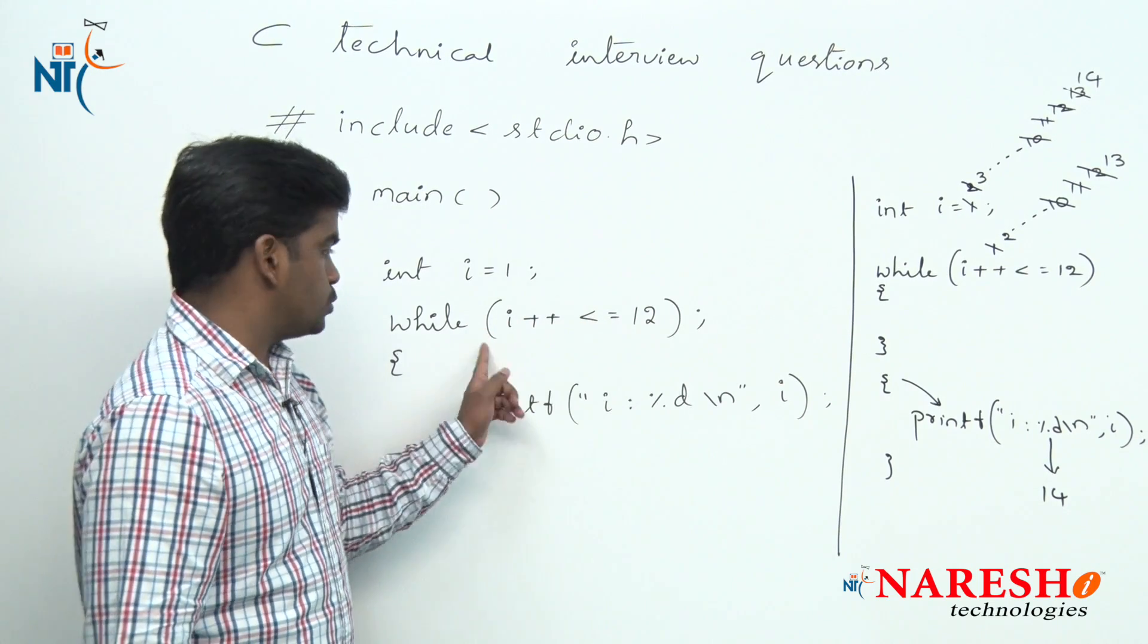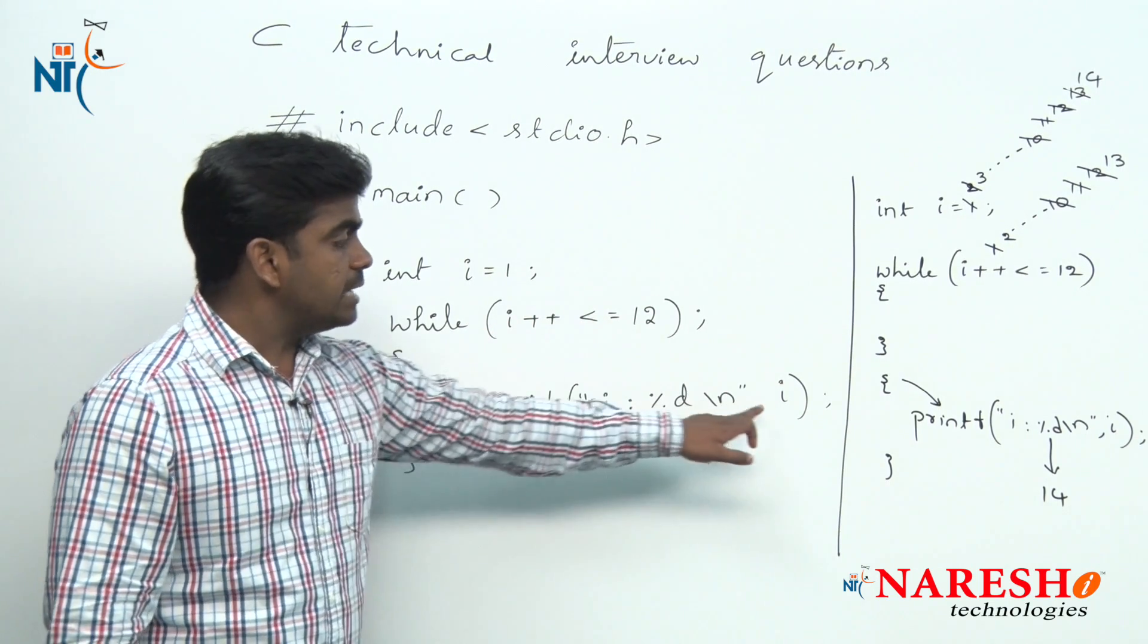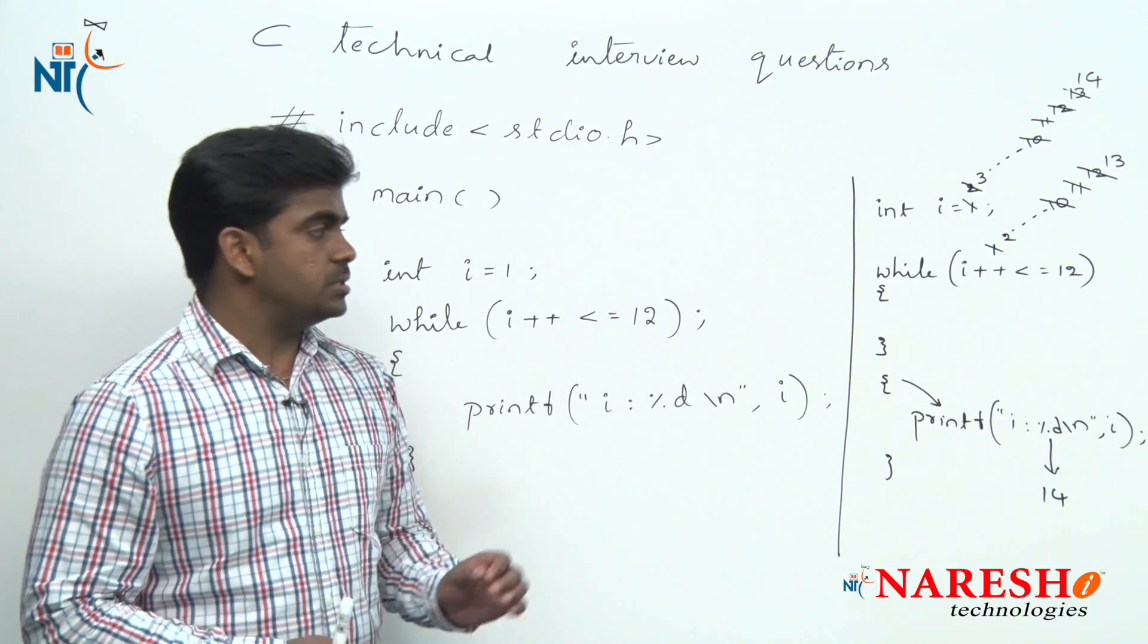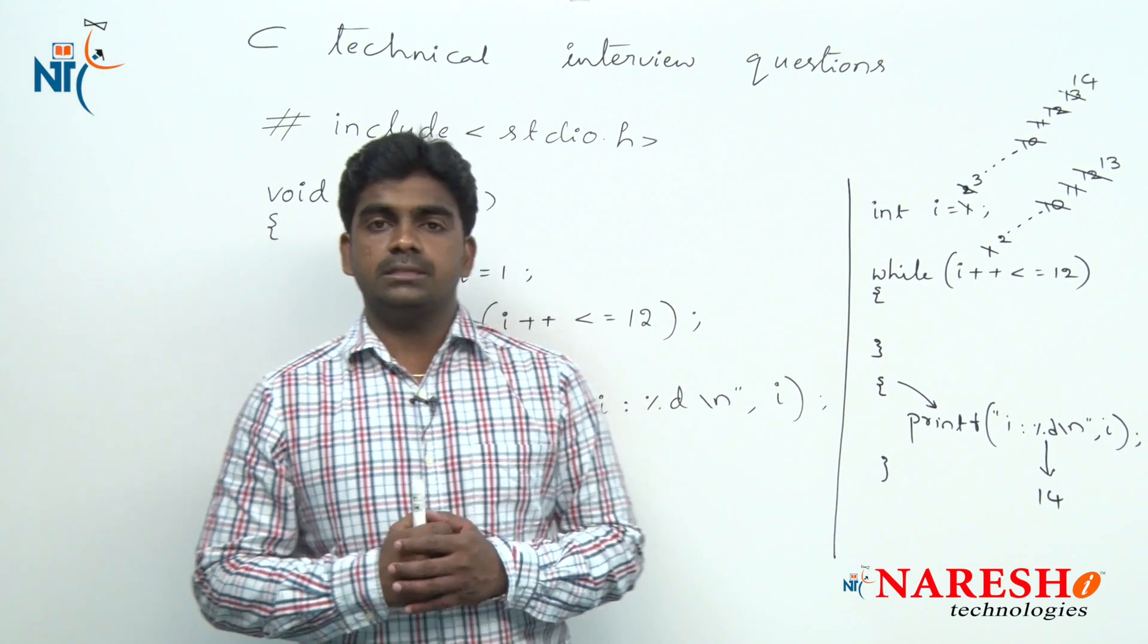This while loop executes as long as the condition is true. Once the condition has failed, the control come out and what is the final i value, that will be printed here. This is how this code snippet executes.